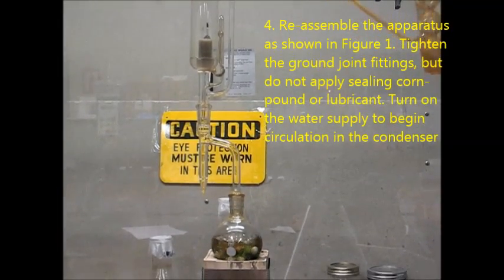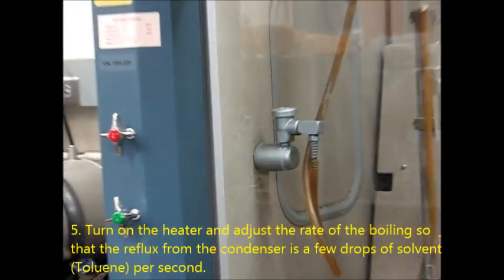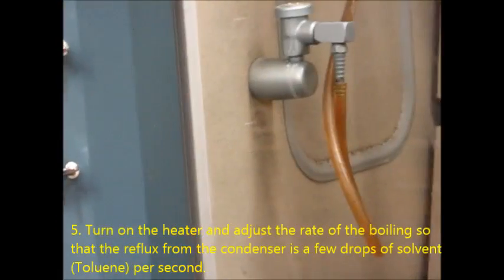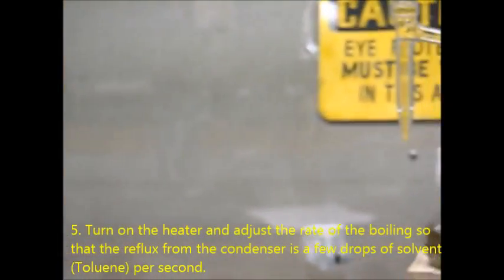Then we'll turn on the water supply to begin circulation in the condenser. Our next step is to turn on the heater and adjust the rate of the boiling so that the reflux from the condenser is a few drops of solvent per second.